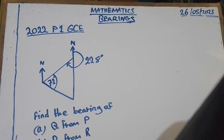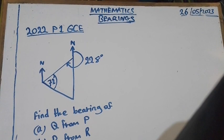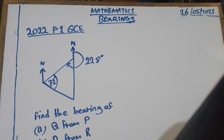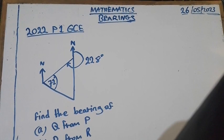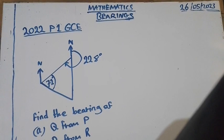The bearing of P from Q is 228 degrees. Angle QPR equal to 72. And R is due south of Q. Find the bearing of Q from P. That's part A. Part B, find the bearing of P from R.